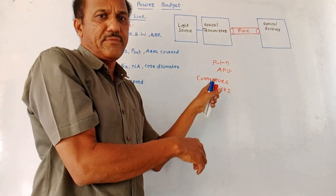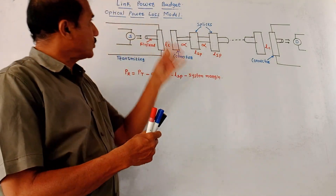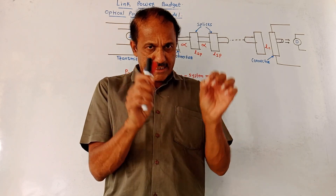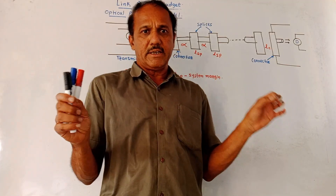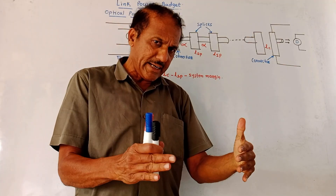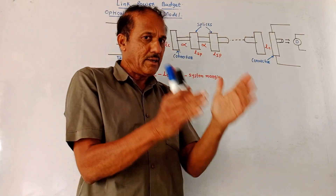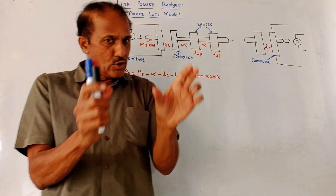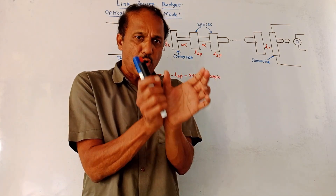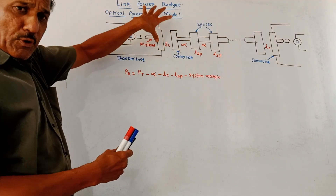The next topic is the optical power loss model. You may expect a direct question: draw and explain the optical power loss model, or explain with diagram the link power budget. This is the corresponding diagram of the link power budget or power loss model. Whenever data is transmitted from transmitter to receiver through the fiber optic cable, different losses occur, and you need to account for all these losses to determine whether the designed fiber optic link is viable or not.